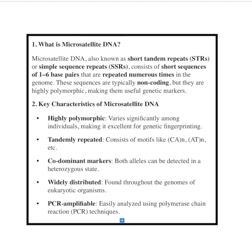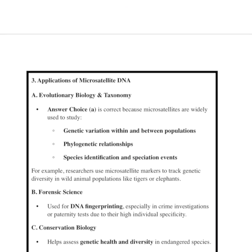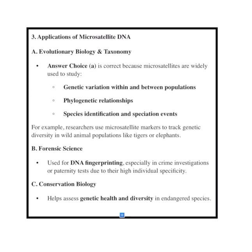Examples include patterns like ATATAT or GCGCGC. They are found throughout the genome, scattered across all of an organism's DNA. Scientists can easily read and analyze these sequences using PCR, which is like photocopying a tiny DNA sample to study it better. Applications include understanding how species evolved and how closely they are related — which is the correct answer here.